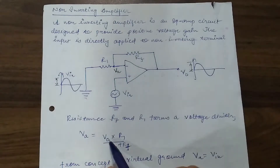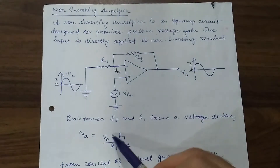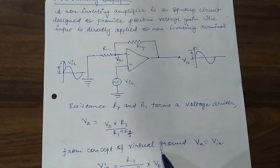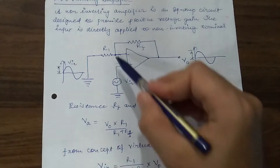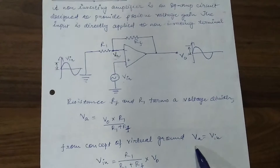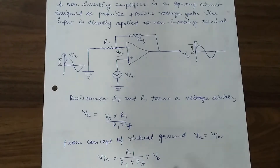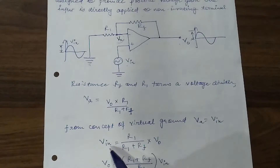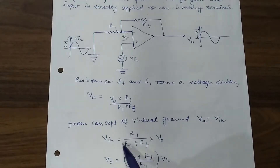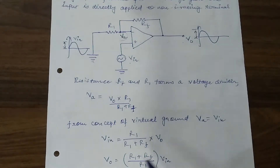That is the equation for the voltage VA. From the concept of virtual ground, we can say that VA is almost equal to VIN. So VA equals VIN. If we substitute VIN in place of VA, then VIN equals R1 divided by R1 plus RF, multiplied by VO.